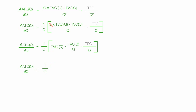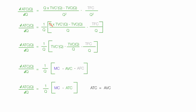So now I have 1 over quantity. The first derivative of total variable cost is marginal cost. So I have 1 over Q times marginal cost, minus average variable cost, minus average fixed cost. And what's remarkable: I have marginal cost minus all of that — which is average total cost, since average total cost equals average variable cost plus average fixed cost. Multiplying through by the negative gives negative average total cost.